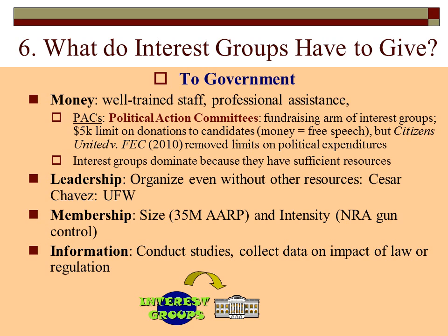Important when dealing with money are political action committees, called PACs — you may have heard of super PACs. PACs are the fundraising arms of interest groups; they deal with all the money part. The Supreme Court has ruled that money is a form of free speech and that corporations can act as individuals for purposes of using money as free speech. However, there is a $5,000 limit on direct donations to candidates.